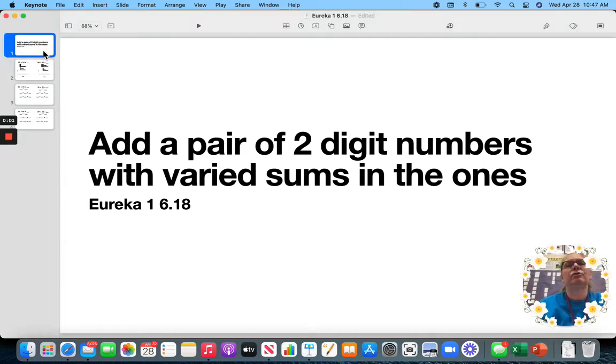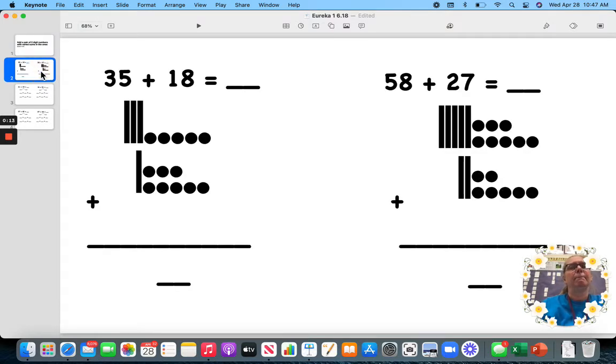Hi friends! Today we are going to add a pair of two-digit numbers with varied sums in the ones place. And we're going to do both the quick draw and the number bond. So, let's do a quick draw first.